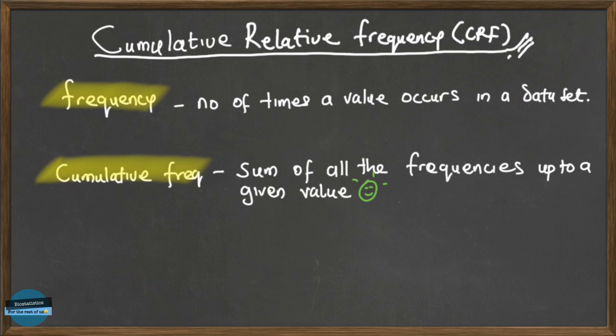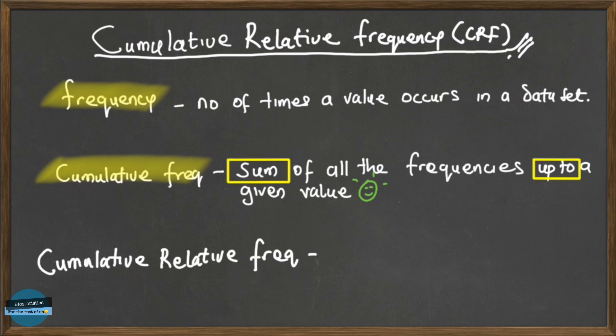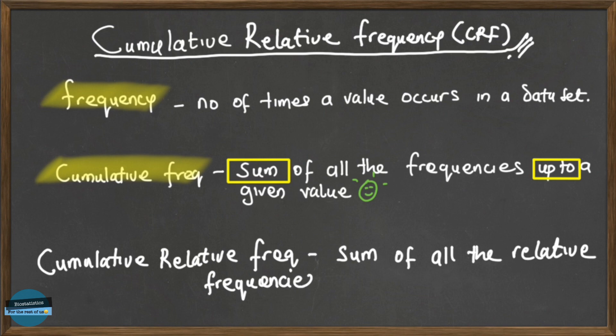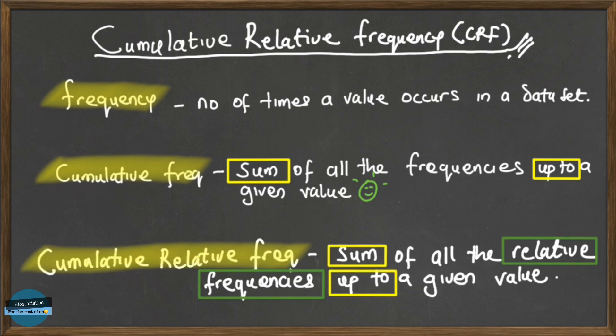Cumulative relative frequency is the sum of all the relative frequencies up to a given value. We know what frequency is, we know how to compute cumulative frequency, and now we want to compute the cumulative relative frequency. To understand it well, it's also important to understand what relative frequency means.